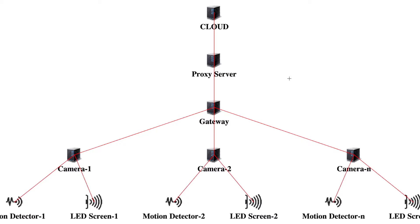Now I will explain the scenario. First we will see our physical topology flow. At the top we have cloud, followed by a proxy server and a gateway fog device. At the bottom we have our camera module connected with a motion detection sensor and screen, which is the actuator.